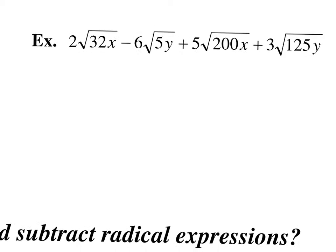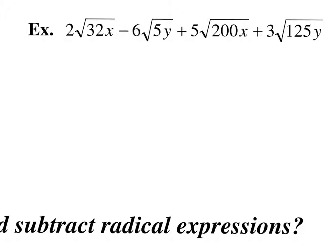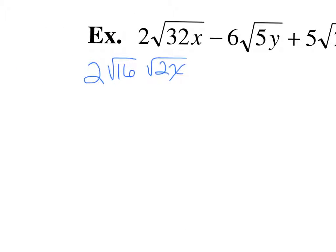This last example has four terms to simplify. For 2 square root of 32x: 32 is 16 times 2, x is alone so it goes in the not perfects. Square root of 16 is 4, multiplied by the 2 out front gives 8 square root of 2x. For negative 6 square root of 5y: 5 has no perfect square factors and y is alone, so this stays as 6 square root of 5y.